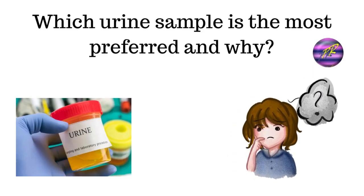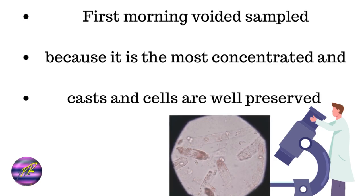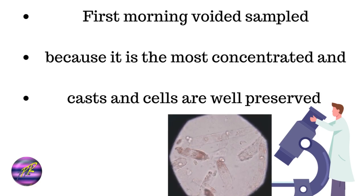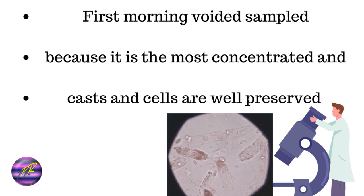So the question is: which urine sample is the most preferred and why? The first morning voided sample is the most preferred sample because it is the most concentrated, and the casts and cells are well preserved in this sample.